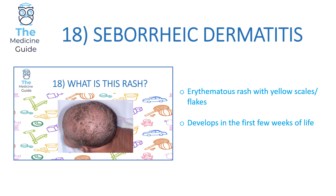Rash 18 is seborrhoeic dermatitis — an erythematous rash with yellow scales and flakes, developing in the first few weeks of life. It is also known colloquially as cradle cap. In the exam, if there is any description of a rash with yellow scales and yellow flakes, immediately think seborrhoeic dermatitis, pick that answer and move on.